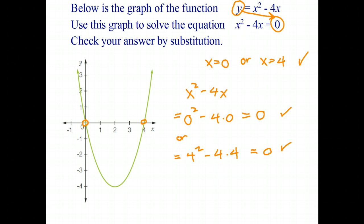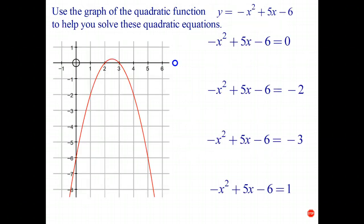Okay let's do a few more just to cement the idea. So here's the equation of the graph y equals negative x squared plus 5x minus 6. There's the graph of the equation and I want to use this graph to solve the quadratic equation negative x squared plus 5x minus 6 equals 0.